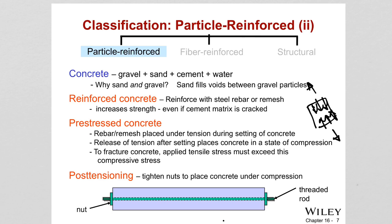Post-tensioning is another way to form reinforced concrete. Think of a rubber band threaded through a series of wooden blocks with holes drilled through them. If you hold the ends of the rubber band, the blocks will sag. But if you tighten the rubber band, the blocks will remain straight. This is the idea behind post-tensioning: tightening the steel rod so that it holds the concrete in place under compression.